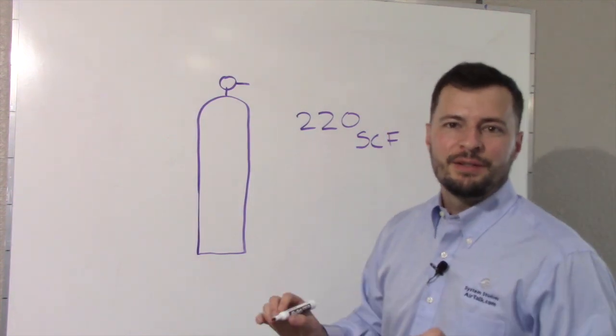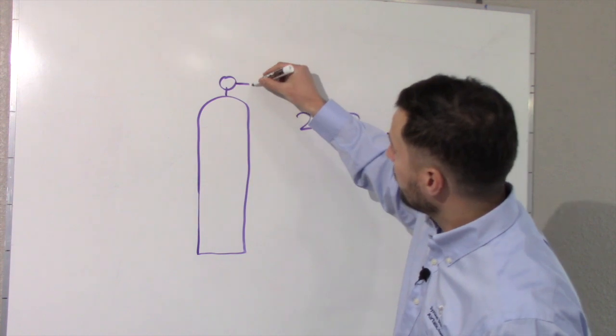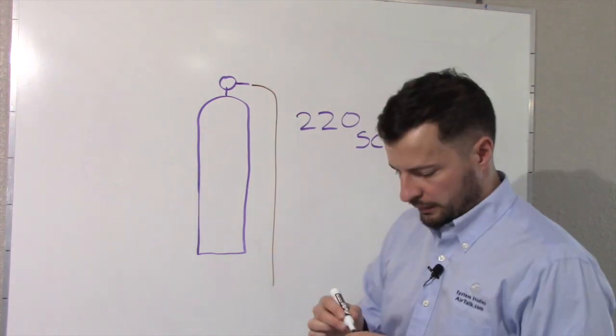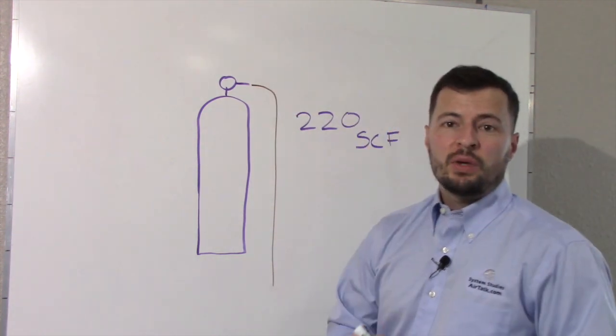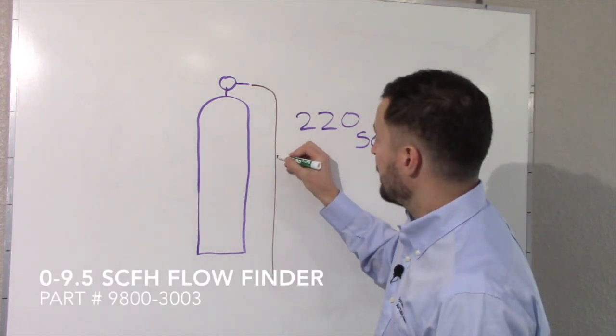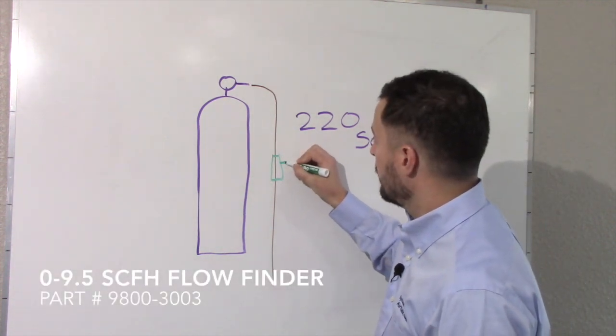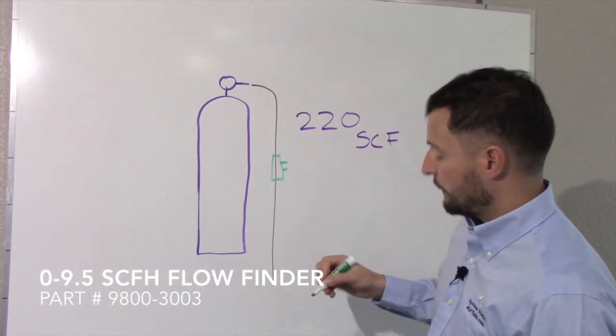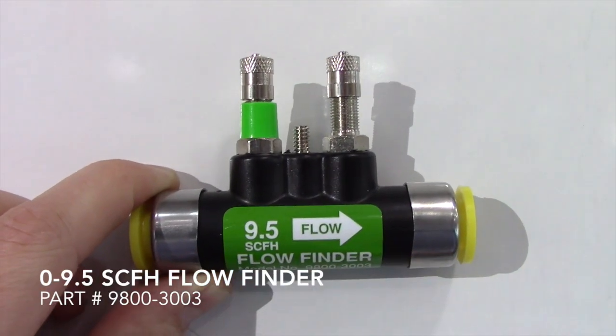So how do we find our worst tank? To start with, we need to go to each one of our tanks and measure our flow rate. To measure our flow, we need to install a 0-9.5 standard cubic feet an hour flow finder between the regulator and the cable. Make sure you install the flow finder with the arrow in the right direction.